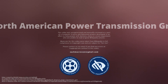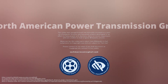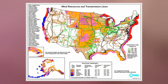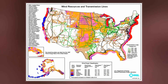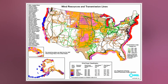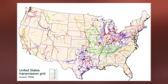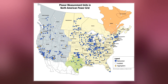The electrical power grid that powers Northern America is not a single grid, but is instead divided into multiple wide-area synchronous grids. The Eastern Interconnection and the Western Interconnection are the largest. Three other regions include the Texas Interconnection, the Quebec Interconnection, and the Alaska Interconnection.